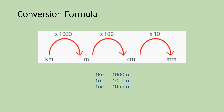Now we will see the conversion formula. The kilometer is a larger unit. One kilometer is equal to one thousand meters. One meter is equal to one hundred centimeters. One centimeter is equal to ten millimeters. From this, we now understand that the kilometer is the largest unit and the millimeter is the smallest unit.